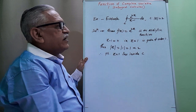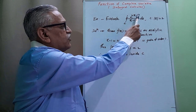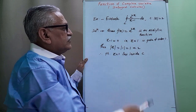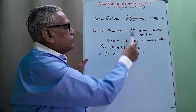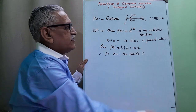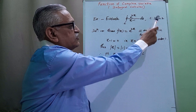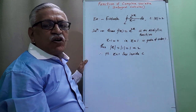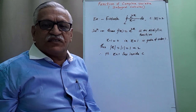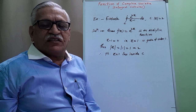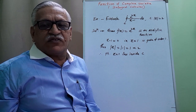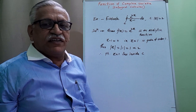Let us evaluate the integration of e raised to 2z divided by (z minus 1) over that closed curve C with respect to z, where that curve C is |z| = 2. This |z| = 2 is a standard circle whose center is at the origin and radius is 2.